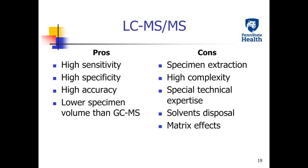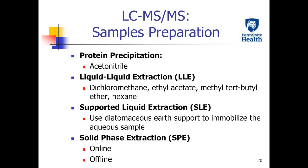LC tandem mass spectrometry has become an attractive method due to its high sensitivity, specificity, accuracy, and less specimen volume than GC-MS. Although it has limitations including specimen extraction, high complexity, need of special technical expertise, solvent disposal, and potential matrix effects.